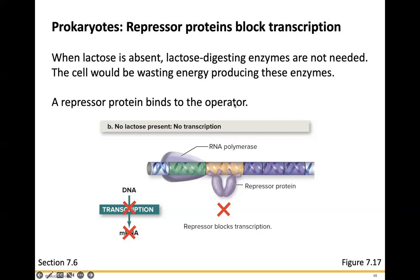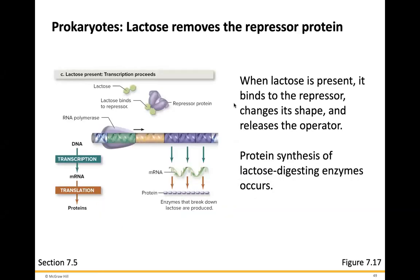Repressor proteins block transcription. When lactose is absent, lactose-digesting enzymes are not needed, and the cell would waste energy producing them. So a repressor protein binds to the operator, preventing transcription. When lactose is present, it binds to the repressor, which changes shape and releases the operator, resuming protein synthesis of the lactose-digesting enzymes.